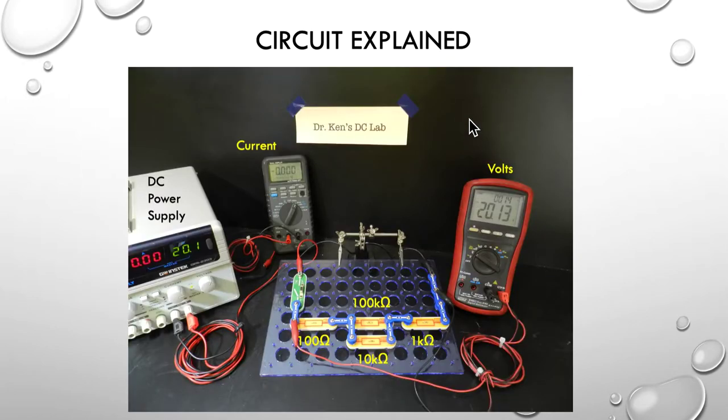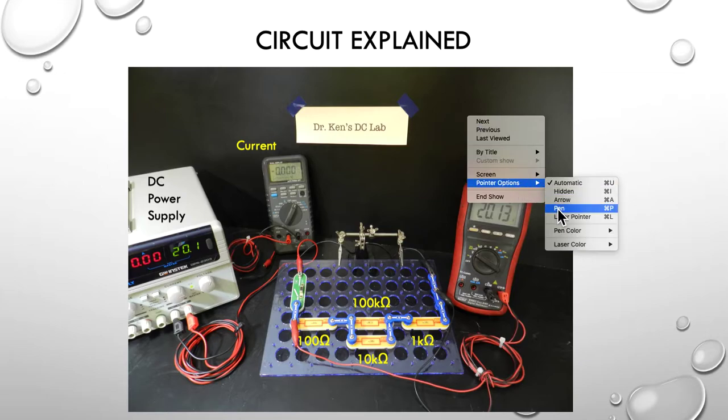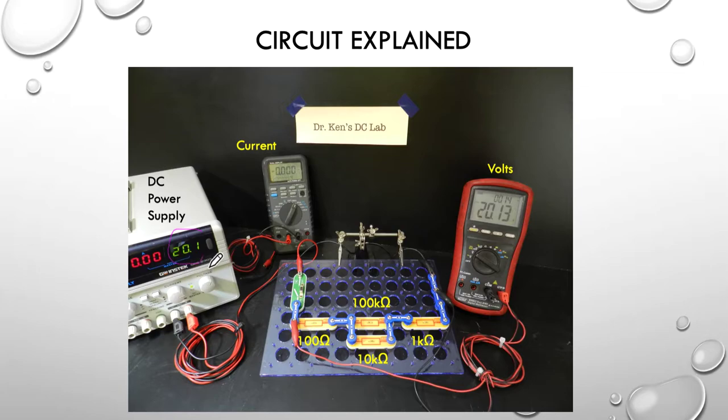So here's the physical circuit. A quick explanation: DC power supply is running at 20 volts. I've set this multimeter up to milliamps, so it's measuring current. The meter over here I've set to volts DC, measuring our voltages. We have a switch, just an ordinary slider switch here, and we have our 100 ohm resistor, our 100k and a 10k all in parallel with our 1k.